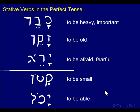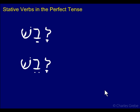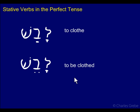Some verbs have both patterns. LAVASH and LAVESH — LAVASH means to clothe and LAVESH means to be clothed. Here we have a verb where in one form it's dynamic and in the other form it is stative. To clothe is something you do, it's an action; to be clothed is a state. And it's reflected by the verb form. Sometimes, however, the distinction between dynamic and stative is not all that clear, and sometimes the forms are opposite from what you would expect, so the categories are not watertight.